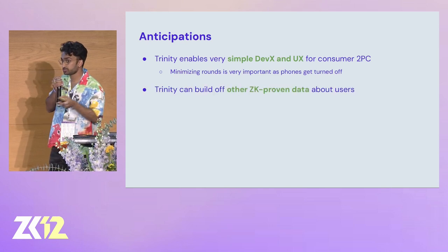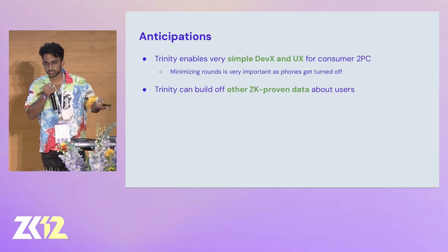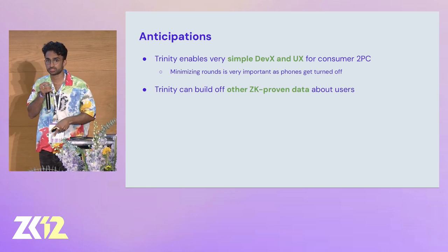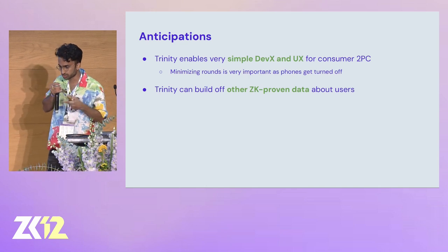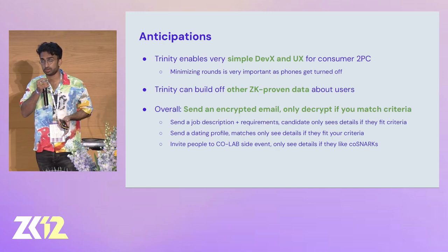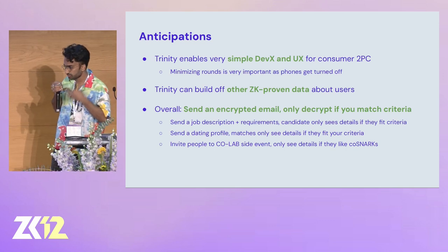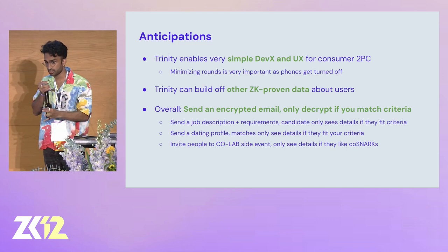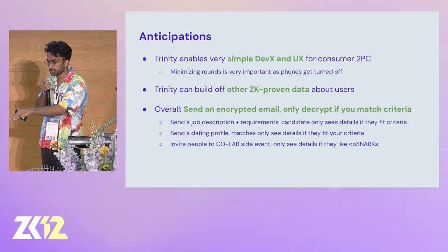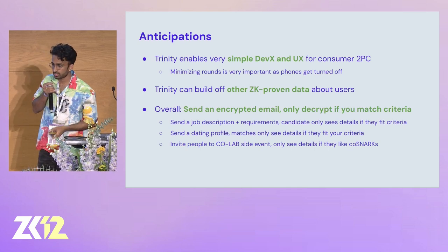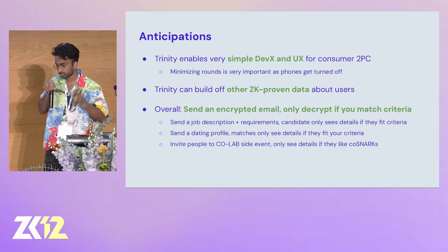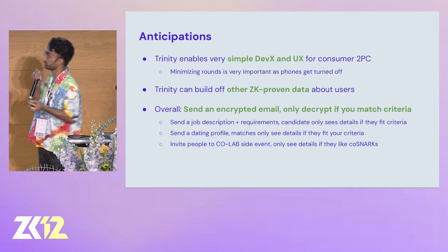The cool thing is that because we're building off Plonk and any KZG-based ZK-SNARK, you can actually build off other ZK-proven data that users have posted, whether on blockchains or other settings. Trinity can plug into this very naturally, especially in a world where hopefully people are generating more and more proofs about themselves. The overall mental model for Trinity is that Alice can send Bob an encrypted message with a set of criteria and some hidden information, and Bob will only ever see the hidden information if he actually matches those criteria — a combination of witness encryption and multi-party computation.